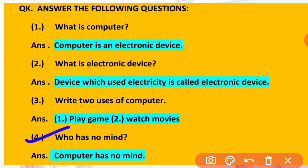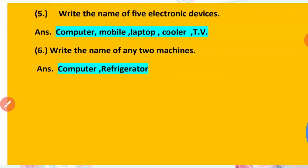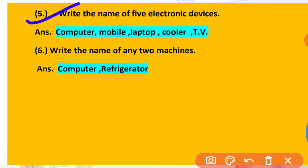Fourth — who has no mind? Computer has no mind; it works on others' instructions. Fifth — write the names of five electronic devices: computer, mobile, laptop, cooler, and TV. Sixth — write the name of any two machines: computer and refrigerator.